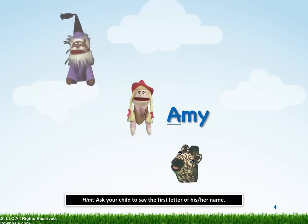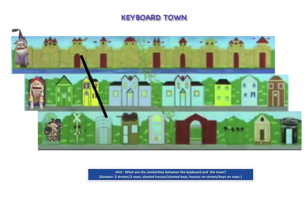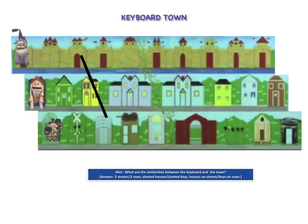Amy's name starts with an A. Zebra begins with a Z and Q-Word begins with a Q. The puppets live in houses in the town. Amy lives in the first house on Home Key Street. Zebra lives in the first house downtown. And Q-Word lives in the first house uptown.